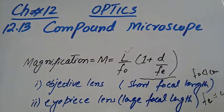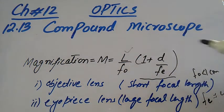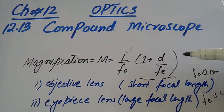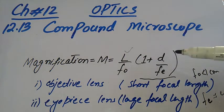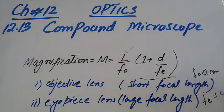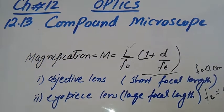We have discussed the simple microscope in the previous lecture — this is basically a magnifying glass. The eyepiece provides magnification like a magnifying glass, and this gives us the magnification of the image.